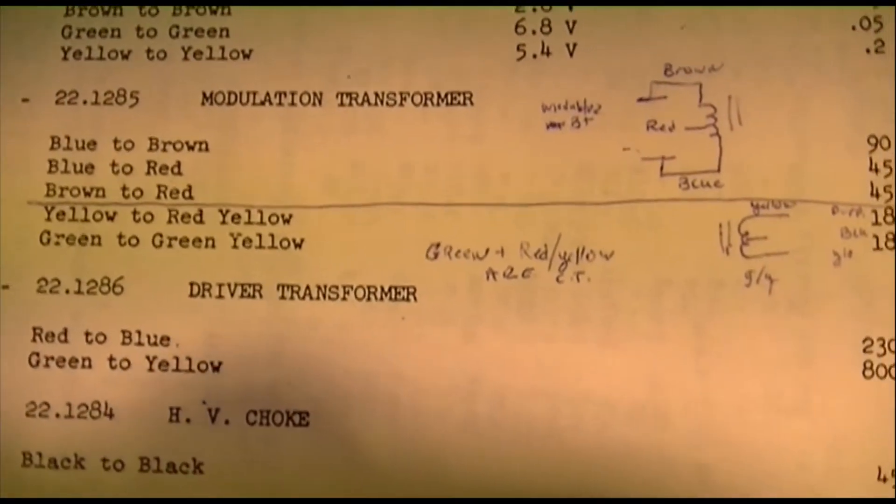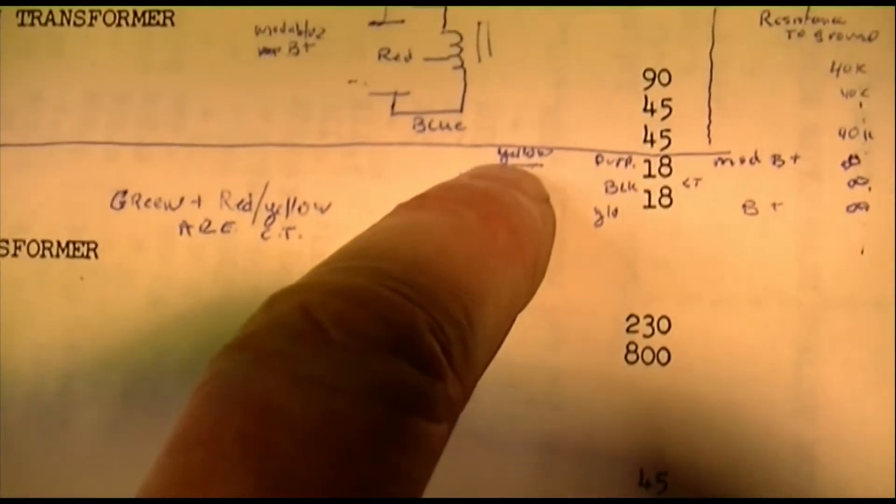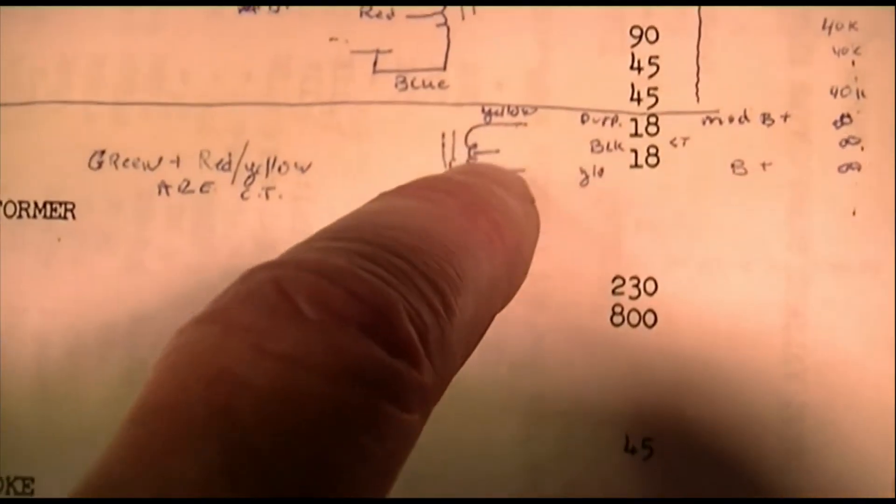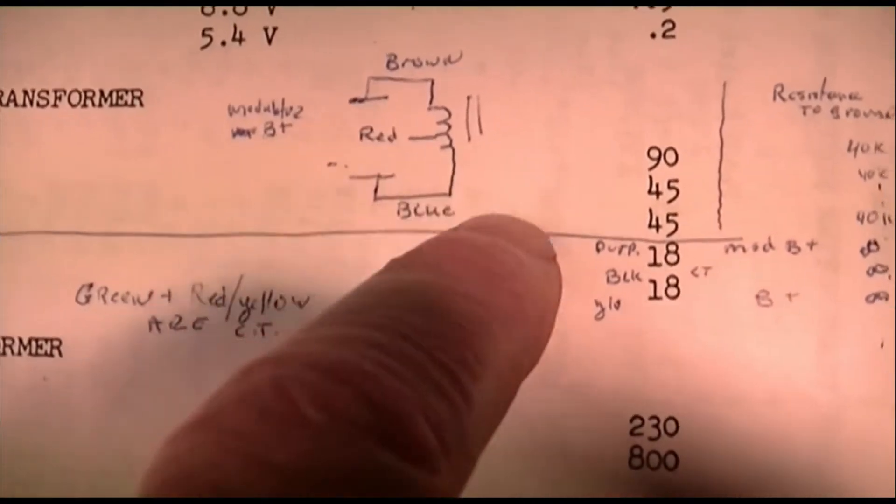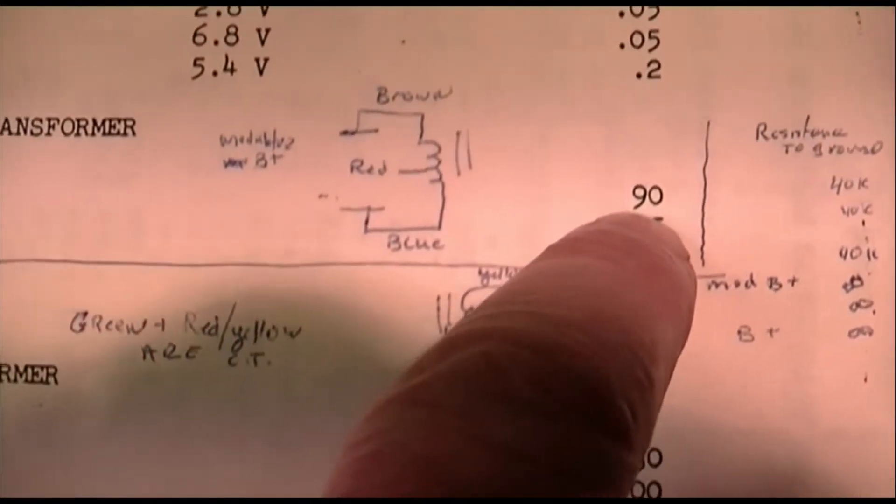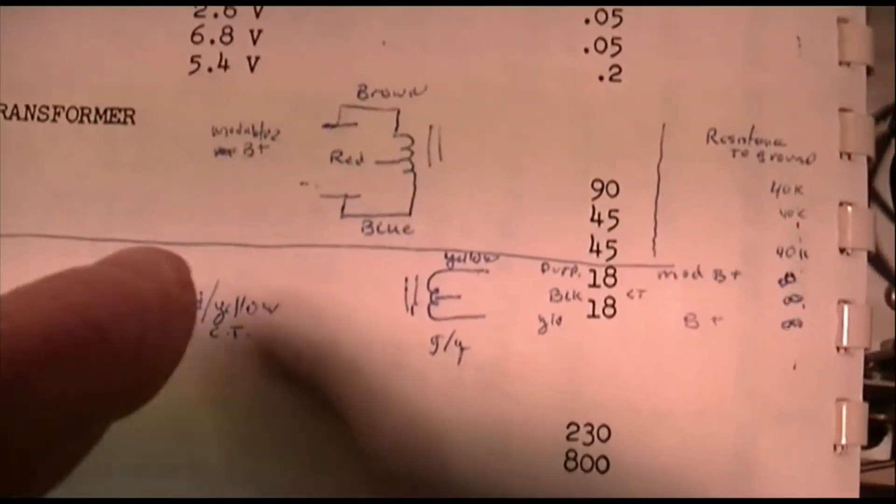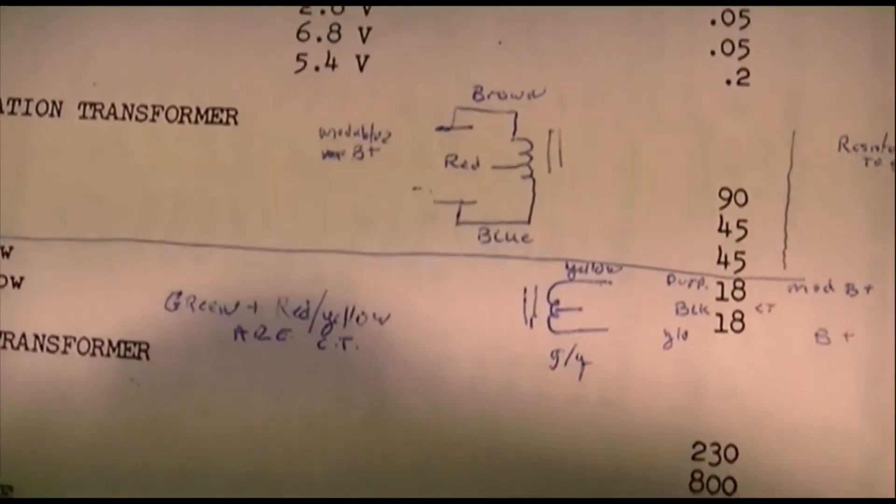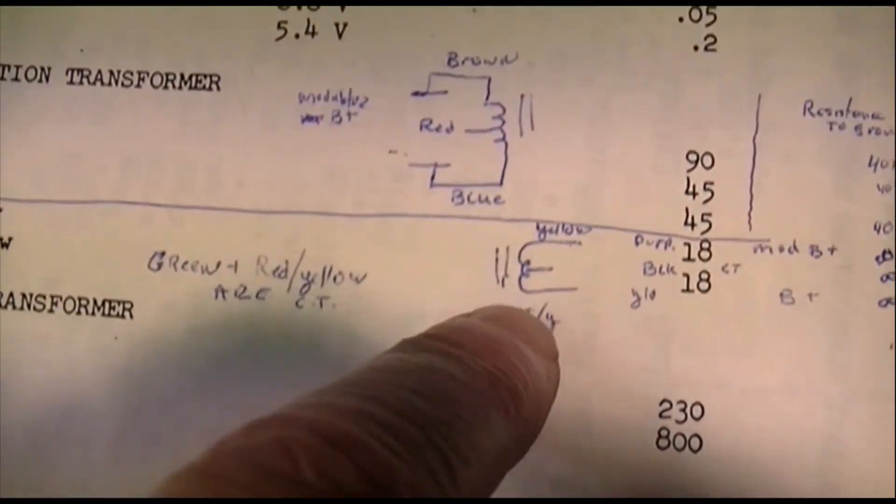Okay, what we're going to do right now is measure the resistance of the primary and secondary of the modulation transformer. Between the center tap and either side of the primary should read about 18 ohms and 36 ohms across the whole thing. For the secondary between the center tap and either side, about 45 ohms and across the whole thing 90. If your readings are an ohm or so different, don't worry about it. You also want to check between these windings and ground to make sure that there's no short to ground inside the transformer, and also measure between the primary and the secondary.